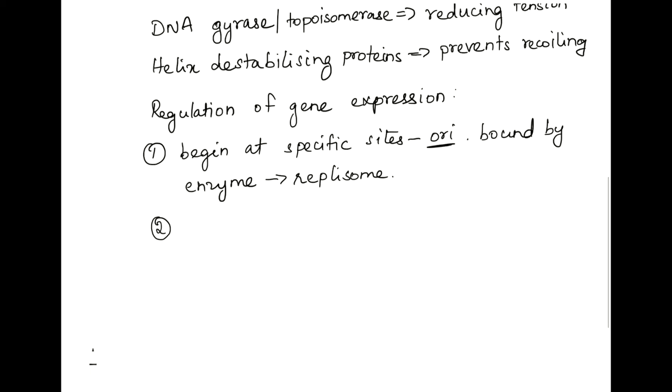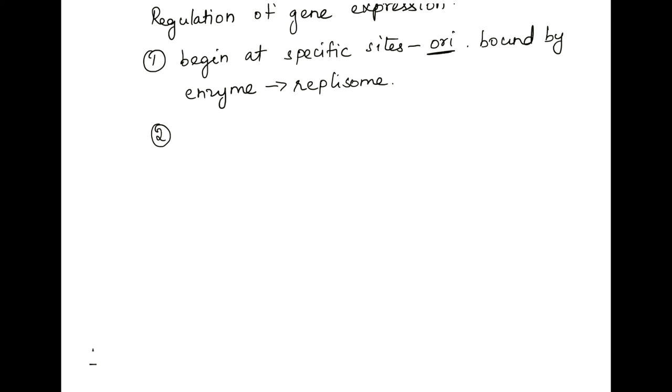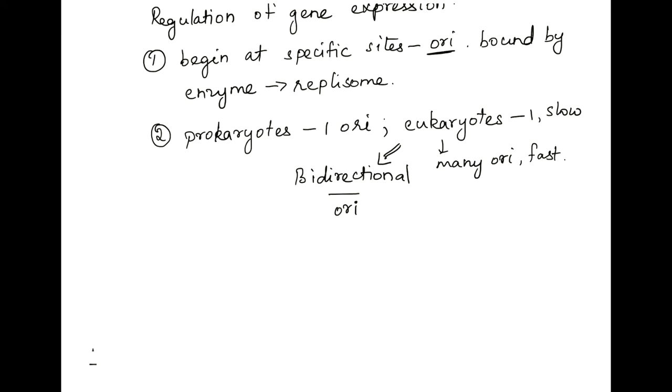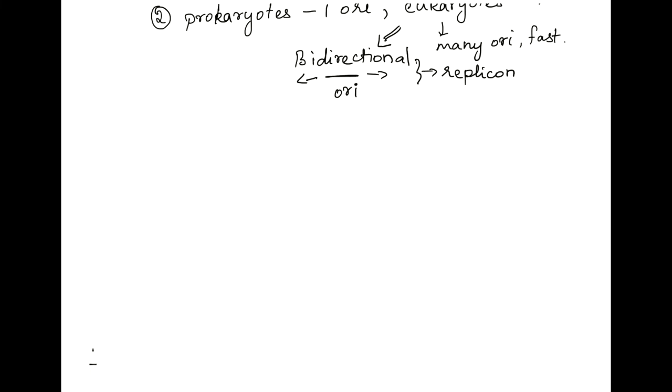The next regulation or control at the replication for gene expression is that in prokaryotes, there is only one ori region or a single ori region, whereas in eukaryotes, the origin region can be either one, which is a slow replication process, or many. And if there are many ori regions, then it is a fast replication process. Besides, in eukaryotes, the replication is bidirectional. That is, it happens in both directions from the origin region, so it will result in formation of a replicon, which is called the replication happening in both directions. So this is how genes are regulated at the replication level itself.